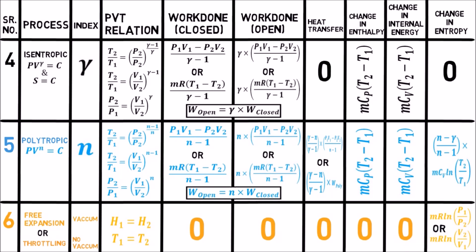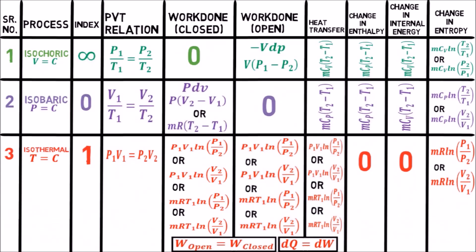I will discuss these formulas in my next videos. Remember these theory points — they are helpful for exams where calculators are not allowed, like Engineering Services, Junior Engineer, ISRO, and technical interviews. First: for isochoric process, work done for closed system is zero and heat transfer equals change in internal energy. Second: for isobaric process, work done for open system is zero and heat transfer equals change in enthalpy. Third: for isothermal process, work done for open system equals work done for closed system, which also equals heat transfer, and change in internal energy and change in enthalpy are both zero.